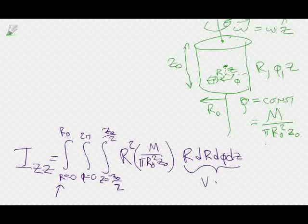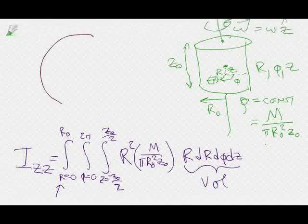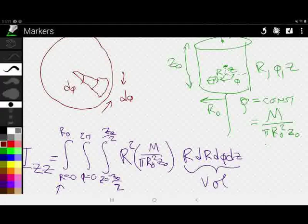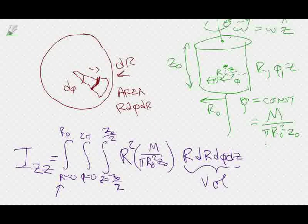That is the volume element in cylindrical coordinates. How do I know that? Looking down on the top of the cylinder, I consider the area element with angle dφ. The arc length is r dφ, so the area of this element is r dφ dr, and then you multiply by dz to get the little volume. So the volume element in cylindrical coordinates is r dr dφ dz.